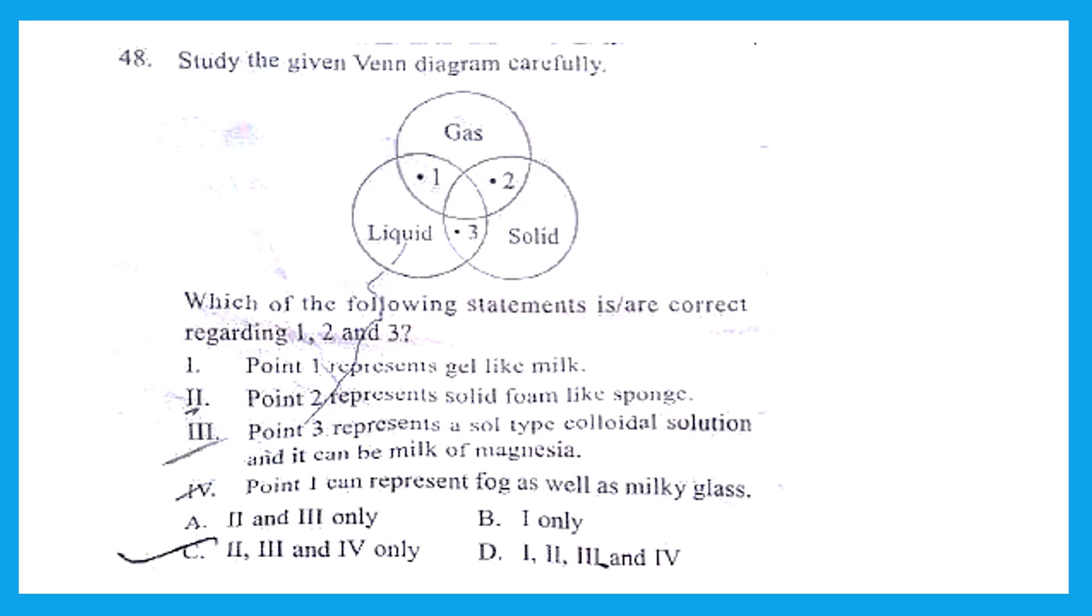The first one is point 1 represents gel like milk. Now point 1 is between liquid and gas, that is both liquid and gas. It is incorrect because point 1 is liquid aerosol. Statement 2 is point 2 represents solid foam like sponge. So point 2 is between solid and gas and it is absolutely correct. Point 3 represents a sol type colloidal solution and it can be milk of magnesia. This is also correct because point 3 is liquid and solid.